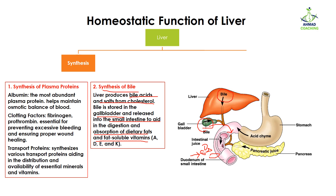Bile is originally synthesized in the liver from cholesterol — cholesterol is converted into bile. Bile then moves from the liver to the gall bladder where it is stored, and whenever needed by the small intestine to digest fats, it is released from the gall bladder into the intestine. It acts on the fats, emulsifying them into small droplets so that enzymes can digest them. Bile is also helpful in the absorption of fat-soluble vitamins, which are A, D, E, and K.